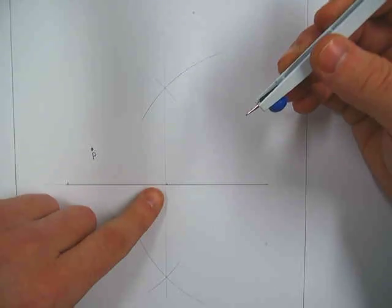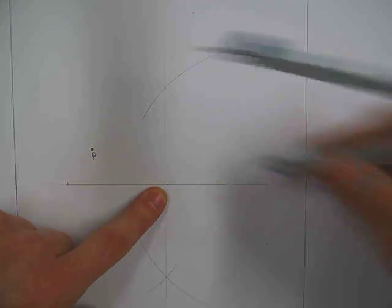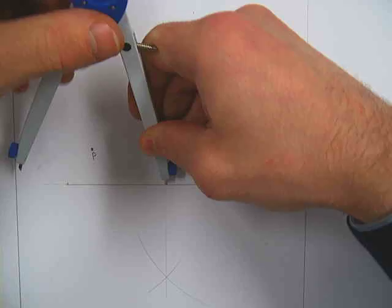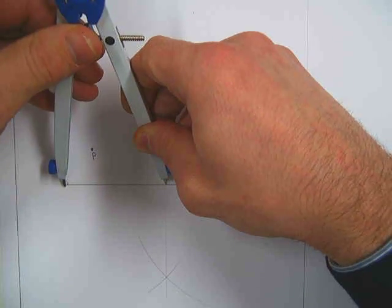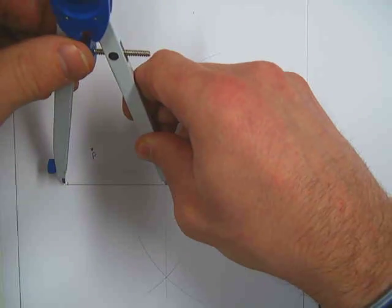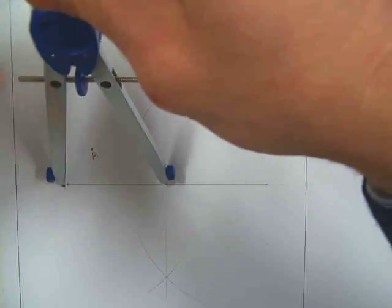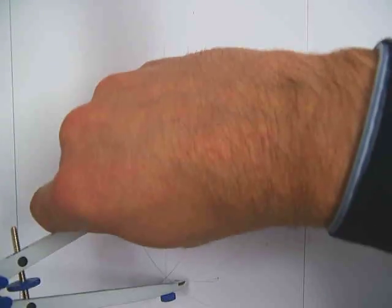Next I will draw the major auxiliary circle. So I know the centre point of my circle is here. So I will put my compass there and open the point of the compass up to the end of the major axis and draw in my major auxiliary circle, like so.